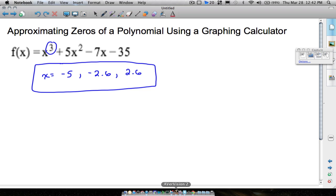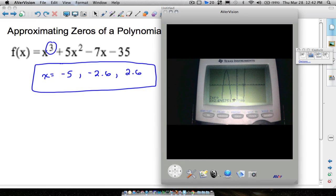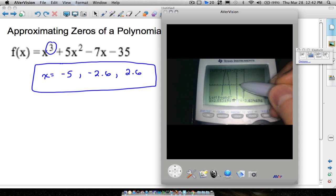I recommend getting used to, when you go to second trace and you go to find the zero, I recommend getting used to typing in a left bound. Like I did here, I said a left bound was two. I mean, we could even say the left bound was one if we wanted to, because one is to the left of where it crosses. And our right bound could, you could do three, four, you could do even five. Because there's only one spot on that graph where it crosses between that left bound and that right bound. And we're still going to get that same answer.